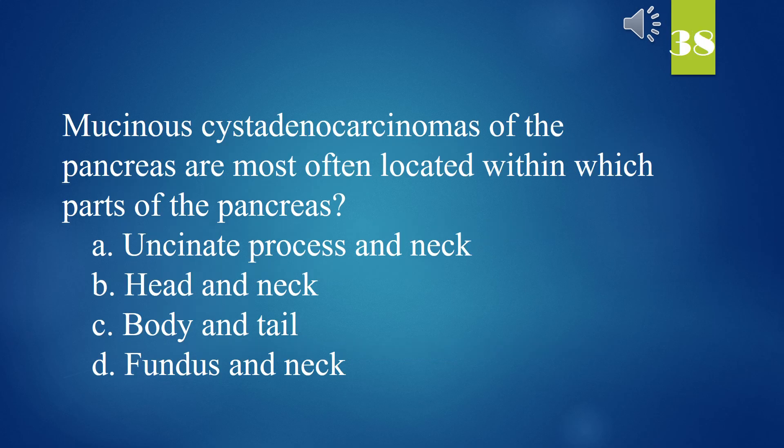Mucinous cystadenocarcinomas of the pancreas are most often located within which parts of the pancreas? A. Uncinate process and neck. B. Head and neck. C. Body and tail. D. Fundus and neck. The answer is C. Body and tail.